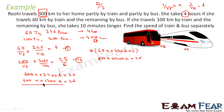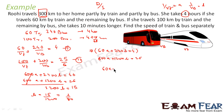Subtracting the equations: 2400b − 1200b = 1200b. We get b = 15/1200 = 1/80. Substituting b into the first equation: 60a + 240 × (1/80) = 4, so 60a + 3 = 4, giving a = 1/60. So a = 1/60 and b = 1/80.